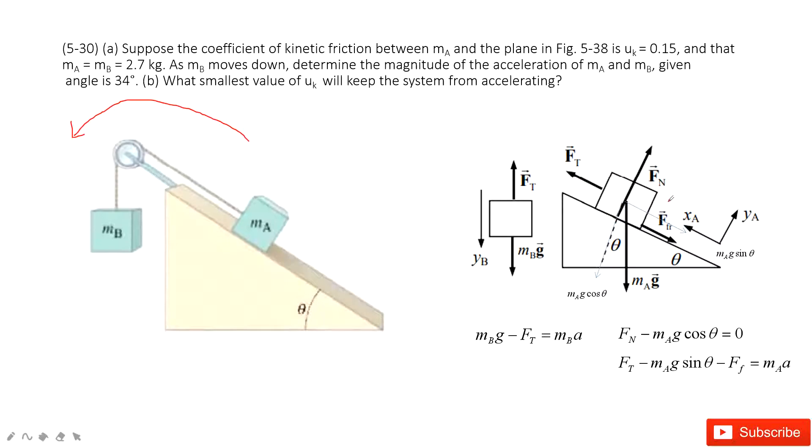we have the tension minus the friction minus m_A g sin θ equals mass A times acceleration. This friction equals the coefficient times the normal force. Solving these four equations, we get the acceleration as a function of angle θ and μ_k.